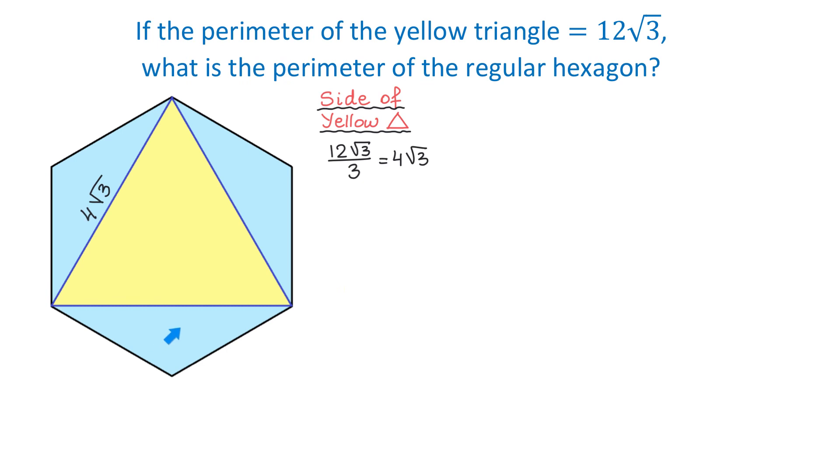This is an isosceles triangle because these two sides are equal. And if from this vertex we draw a perpendicular to the opposite side, then this perpendicular will bisect this angle and it will also bisect this side. If the entire side is 4 square root of 3, then each half will be 2 square root of 3.